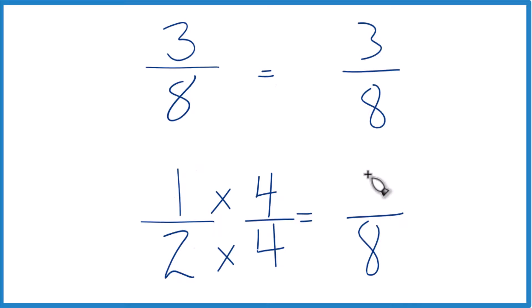1 times 4, that is 4. 4 eighths, that's the same thing as 1 half. They both equal 0.5. But now, because we have the same denominator, compare the numerators. 4 is bigger than 3. So 4 eighths, that's bigger than 3 eighths by 1 eighth.